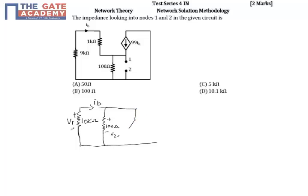Now we have a dependent current source here as given in the question. The current here is 99 Ib. And finally we have the voltage source that we are introducing here. So this is V and the current is denoted by I. So this current here will be equal to I plus 99 Ib.